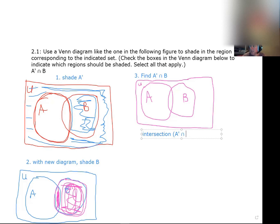Intersection. So just this symbol means we just want the overlap of A prime and B, or the overlap of step one and step two.